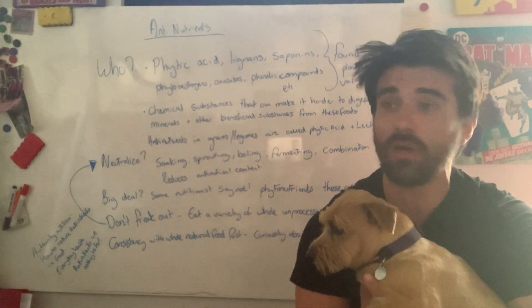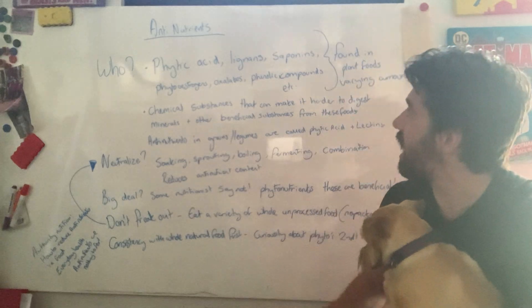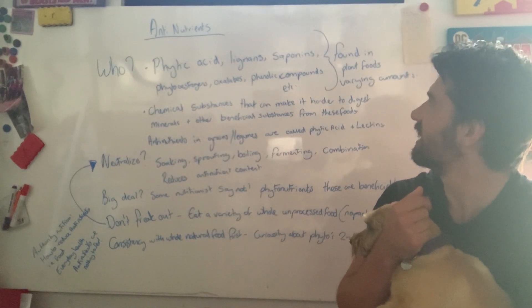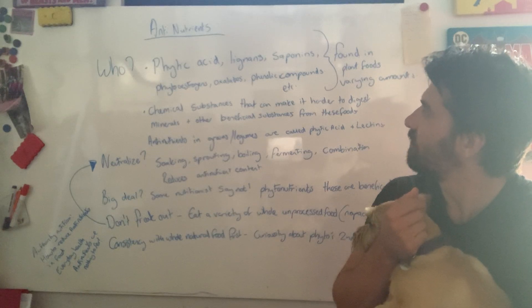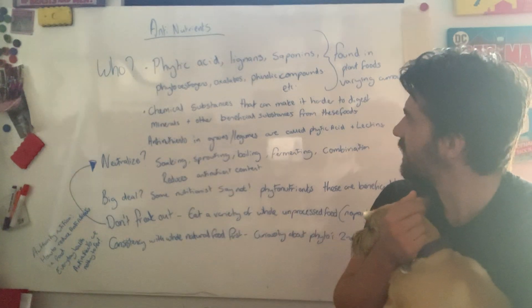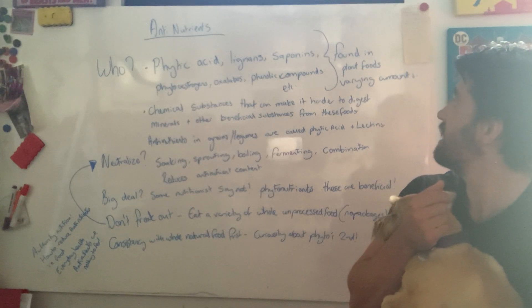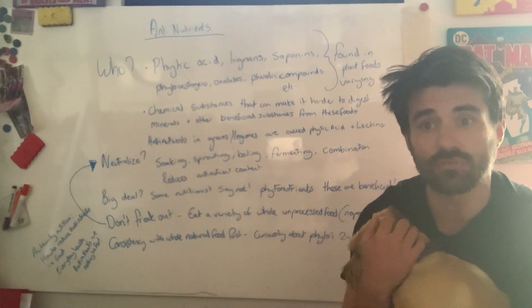So what are anti-nutrients? Well, anti-nutrients are phytic acid, lignans, saponins, phytoestrogens, oxalates, phenolic compounds, and so on and so forth. And these are basically found in plant foods in varying degrees.